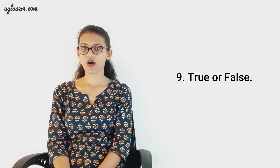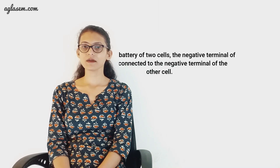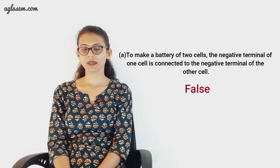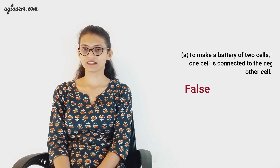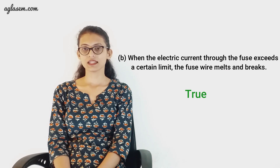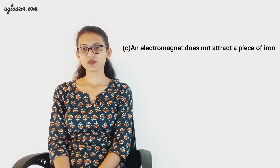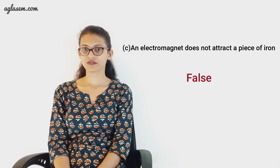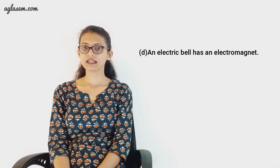Our next question is true or false. First: to make a battery of two cells, the negative terminal of one cell is connected to the negative terminal of the other cell — this is false; opposite terminals should be connected. Second: when the electric current through the fuse exceeds a certain limit, the fuse wire melts and breaks — this is true. Third: an electromagnet does not attract a piece of iron — this is false, as an electromagnet does attract iron due to its magnetic effect. Fourth: an electric bell has an electromagnet — this is true.